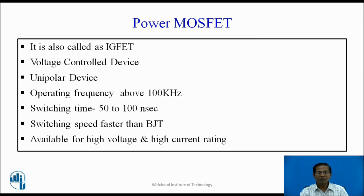MOSFETs are unipolar devices. Current conduction takes place because of majority charge carriers, either electrons or holes — that's why MOSFETs are called unipolar devices. Operating frequency is above 100 kHz, switching time is 50 to 100 ns, switching speed is faster than BJT, and they are available for high voltage and high current ratings.